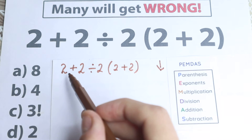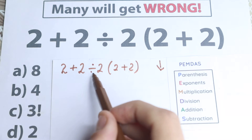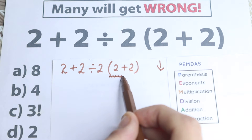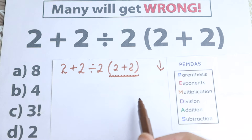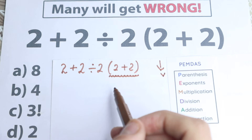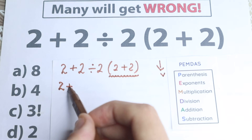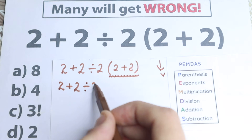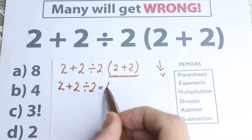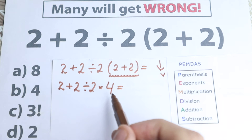Now we need to scan where we have parentheses. We don't have parentheses at the beginning, or in the middle — but we do have parentheses on the right-hand side: 2 plus 2. So we start with those parentheses. 2 plus 2 equals 4. Now we have 2 plus 2 divided by 2 times 4 — no more parentheses. Let's go to the next step.